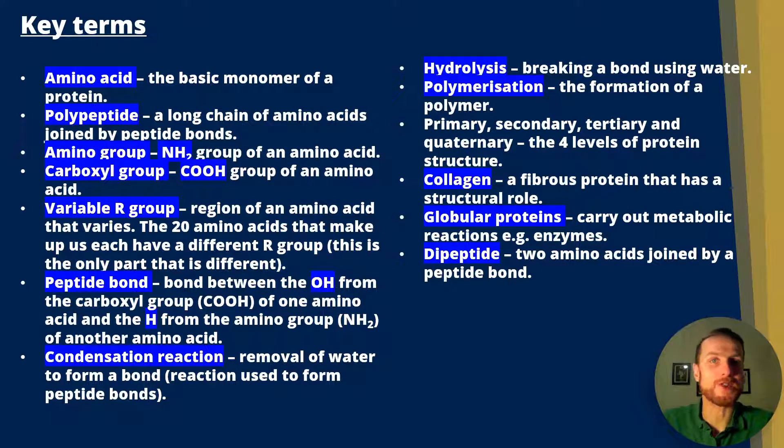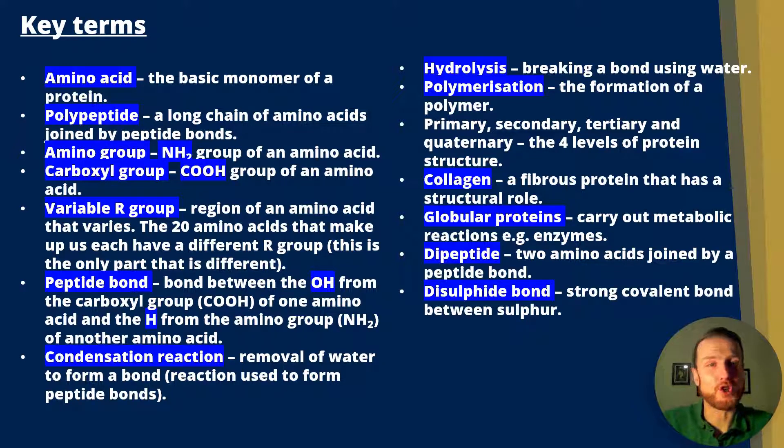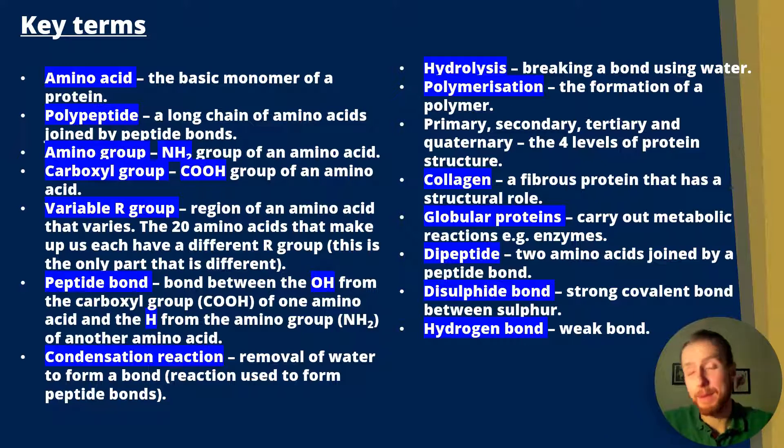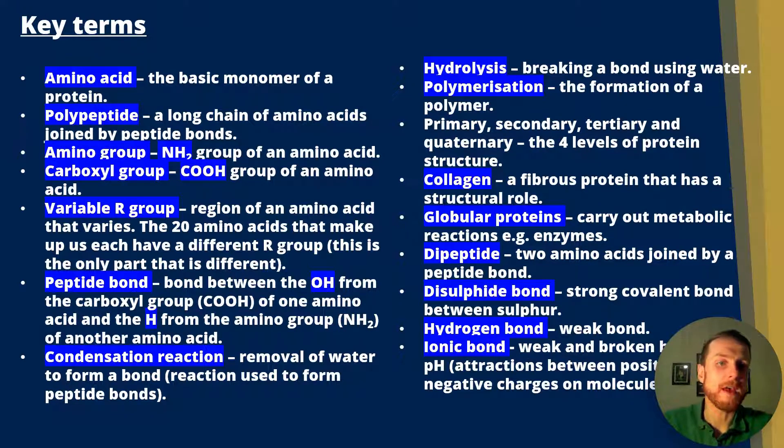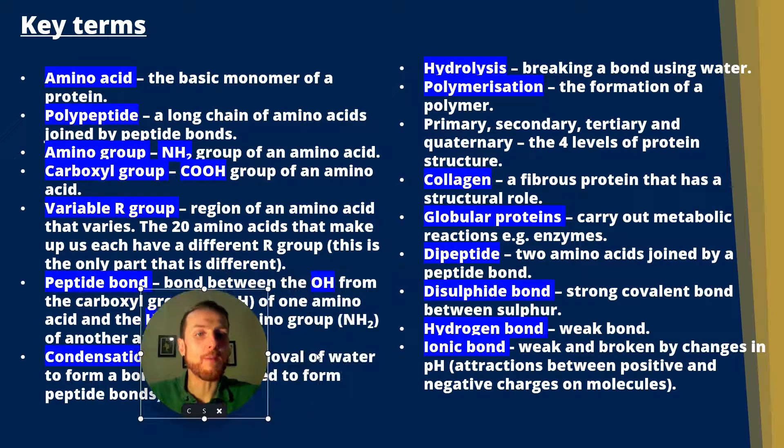A dipeptide—di means two—is two amino acids joined by a peptide bond. A disulfide bond is a strong covalent bond between sulfur atoms, usually from the amino acid cysteine. A hydrogen bond is a weak bond, but in large enough numbers they can be quite strong; individually they are weak. Ionic bonds are weak, broken by changes in pH, and are attractions between positive and negative charges.